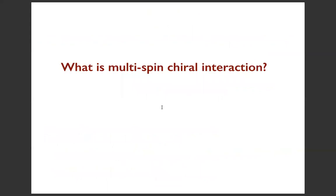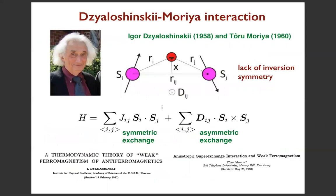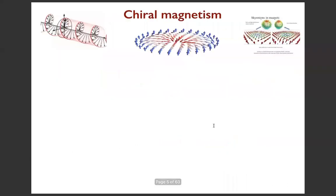So, what the hell is a multi-spin curl interaction? The story dates back to the Dzyaloshinskii-Moriya interaction, which you know very well - it's an interaction between basically neighboring atomic spins, having the form of antisymmetric exchange. That is responsible, when the D vector in the Dzyaloshinskii-Moriya interaction is large, for frustrated magnetism. People now study a lot of chiral magnetic structures - you can even coin the term chiral magnetism.